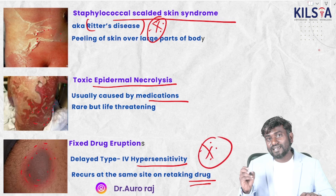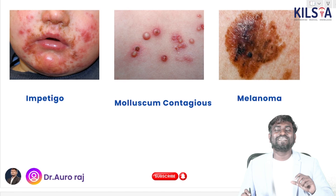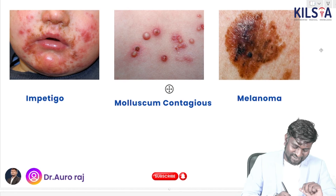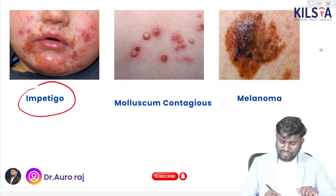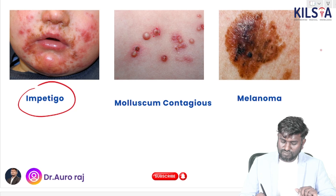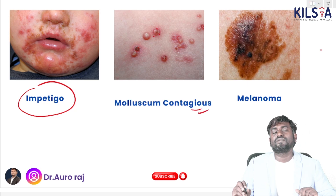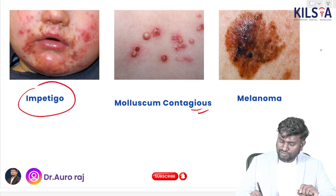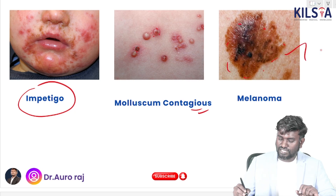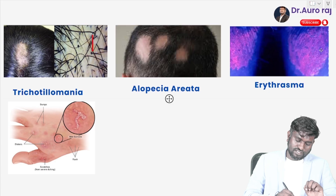This image shows molluscum contagiosum, which has characteristic central umbilication in the middle of each lesion.